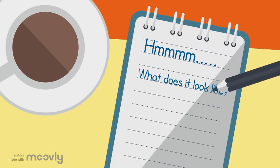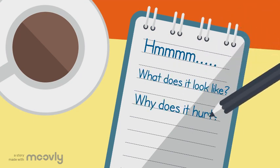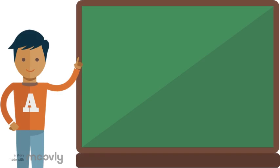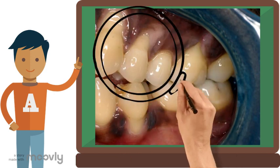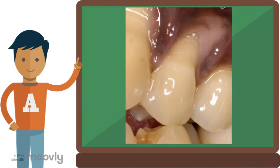Are you wondering what dentinal hypersensitivity can look like on a patient, or maybe even why it would hurt? Here's a patient that has gingival recession. When the gingiva recedes, the root becomes exposed. Let's make one of the areas with an exposed root larger — that's a bit easier to see. Once the root becomes exposed, the underlying dentin can be exposed.